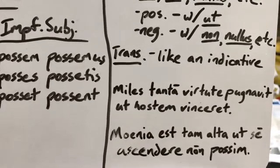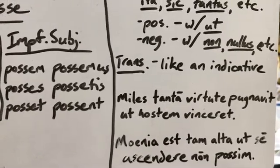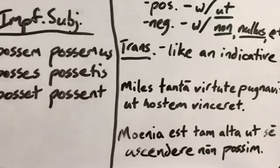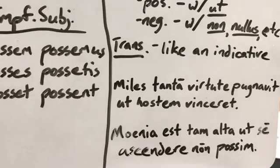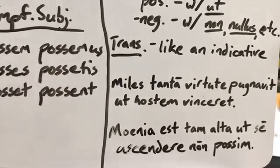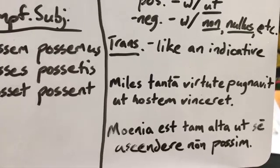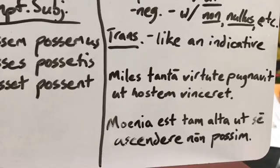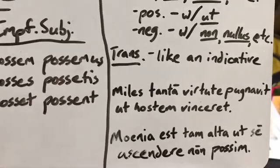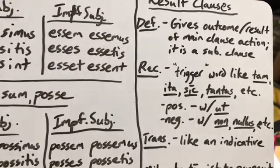Another example down here: the walls of the city — I'm sorry, I messed up my verb there, Bruce; that 'S' should be 'sunt.' So 'moenia sunt tam alta' — the walls of the city are so high, and the result: that I am not able to climb them. I apologize, that 'S' should be 'sunt' once again. So those are some result clauses — your definition, recognition, and translation.